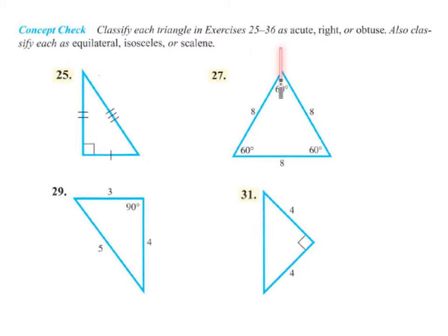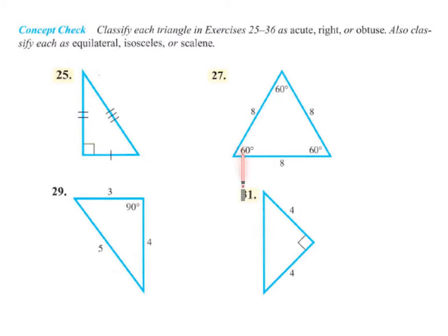Here are some classification examples. Problem 25 has all three sides different and a right angle — so it's a right scalene triangle. Problem 27 shows all sides equal with 60-degree angles marked, so that's an acute equilateral triangle. Problem 29 is a 3-4-5 triangle with a 90-degree angle — right scalene. Problem 31 has a right angle but two equal sides — right isosceles.